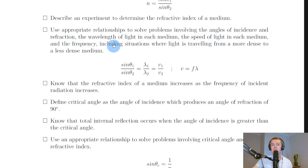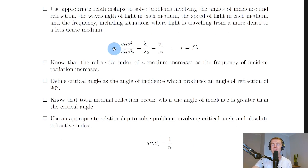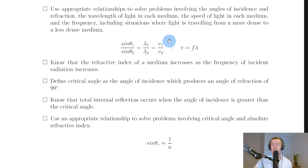You need to use appropriate relationships involving angles of incidence and refraction, wavelength, and speed of light in each medium, including when light travels from a denser to a less dense medium. We have n = sinθ₁/sinθ₂, but also n = λ₁/λ₂ (where λ₁ is wavelength in the less dense medium) and n = v₁/v₂ (where v₁ = 3×10⁸ m/s in air). The wave equation v = fλ also applies.